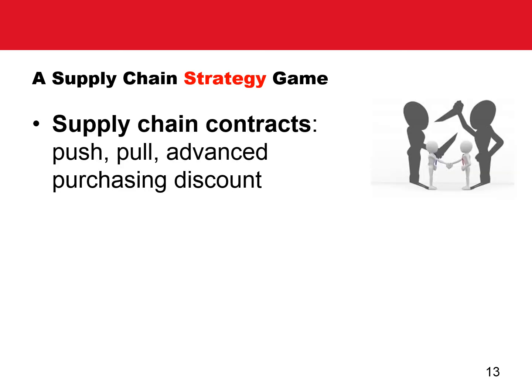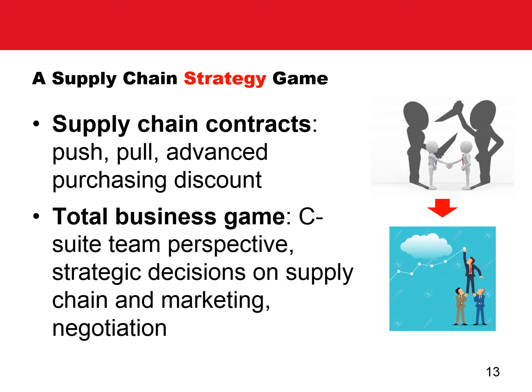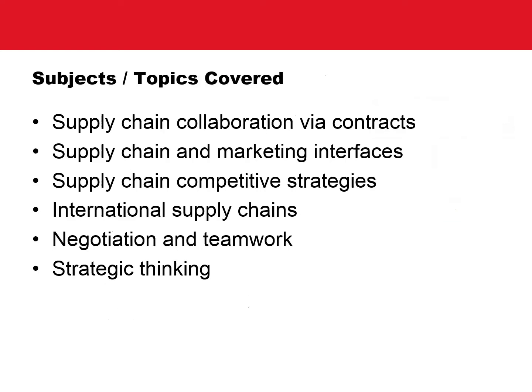The Floral Park simulation is a supply chain strategy game with two unique features. First, it provides various supply chain contracts such as push, pull, and advanced purchasing discount for students to experiment. And second, it is a total business game that gives students a C-suite team perspective, where they must make strategic decisions on product portfolio, supply chain, and marketing. The game can cover a wide range of subjects important to supply chain and operations management curriculum, such as supply chain coordination by contracts, supply chain and marketing interfaces, supply chain competitive strategies, international supply chains, negotiation and teamwork, and finally, strategic thinking.